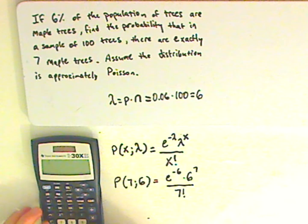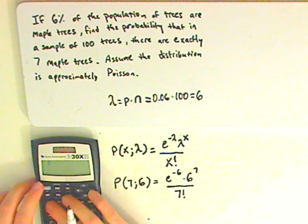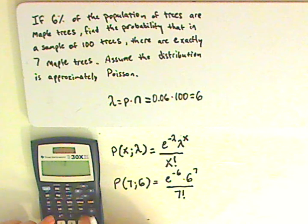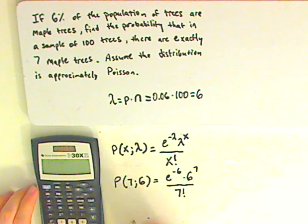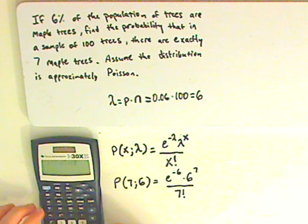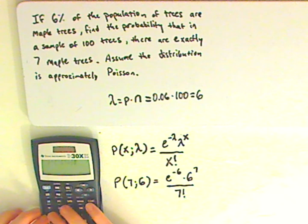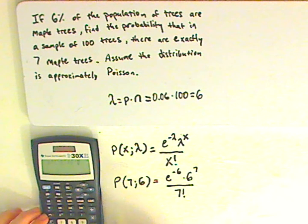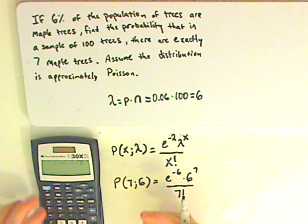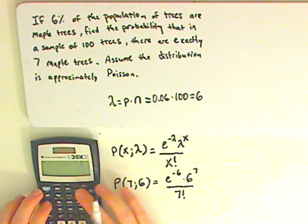So you plug that all into your calculator. So the E raised to negative 6, closed parenthesis, because in this calculator it opens up the parenthesis for the exponent, times 6 raised, and the raised is this up arrow right here, raised to the 7, divided by 7 factorial.